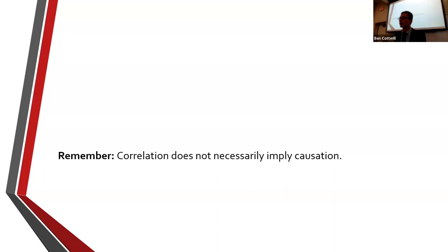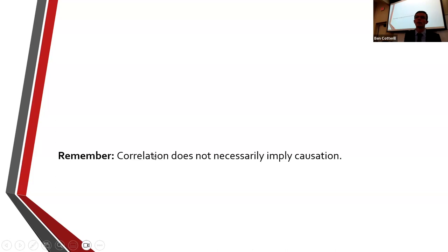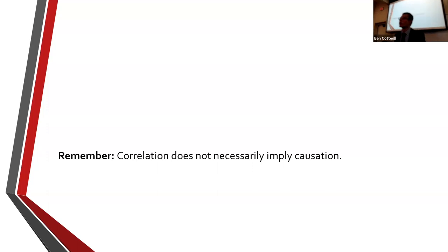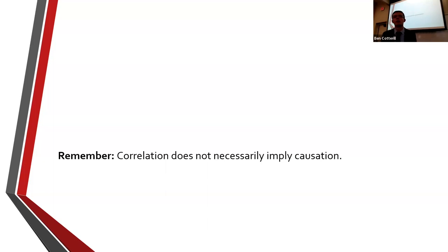We don't always have to demonstrate causality for this to still be insightful, useful information. But sometimes there's a third variable we're not looking at that's actually explaining the association. For example, as ice cream sales go up in a country, homicide rates also go up — it's a reliable correlation. Why is that? Does eating more ice cream cause one to be more homicidal? Obviously not. There's something else explaining the relationship. Does anyone know what it might be?